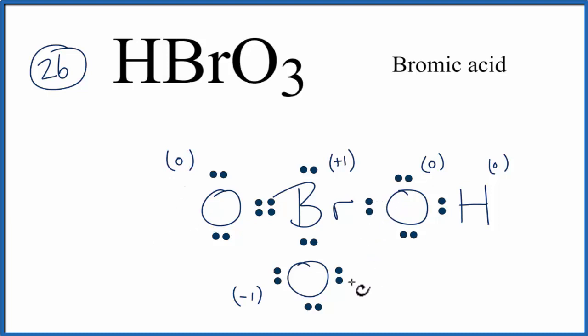We can do even better, though, because we can place another double bond here between this oxygen. Again, this oxygen has an octet, and the bromine, although it has 2, 4, 6, 8, 10, 12 valence electrons, it's okay because bromine can have an expanded octet.